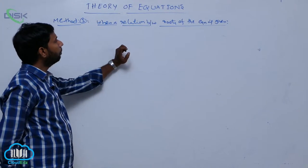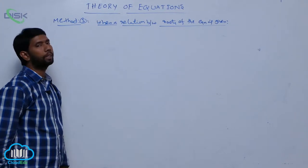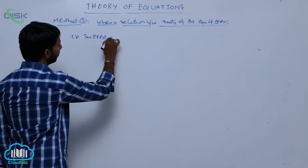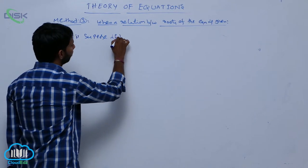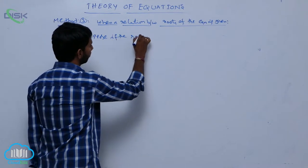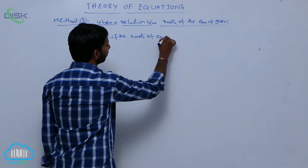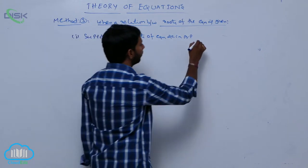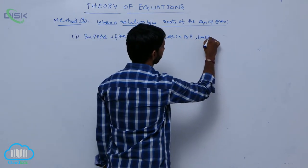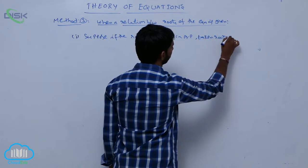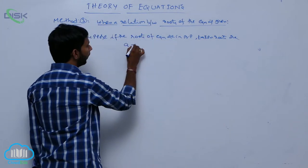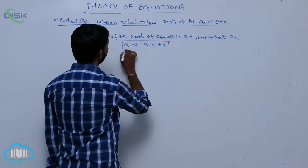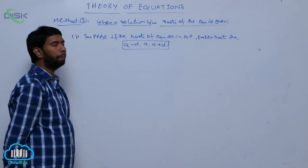The third method is when the relation between roots of the equation is given. Suppose if the roots of equation are in AP, the roots are taken as A minus D, A, A plus D.